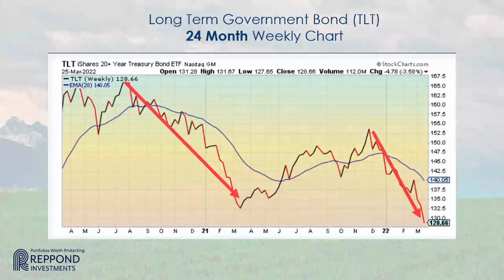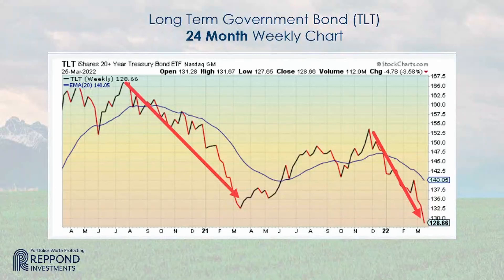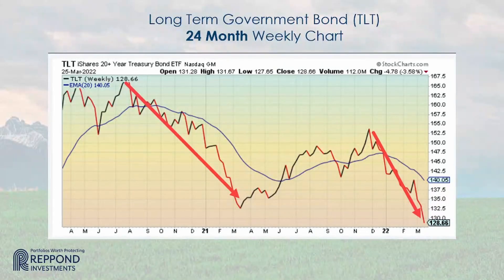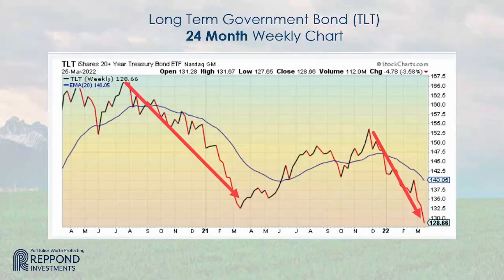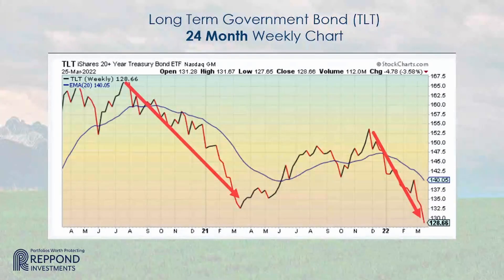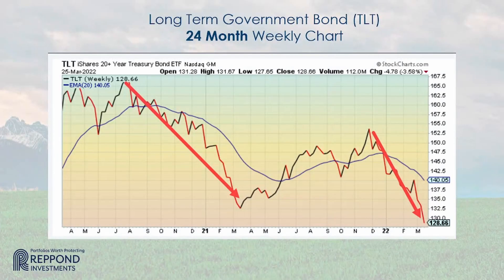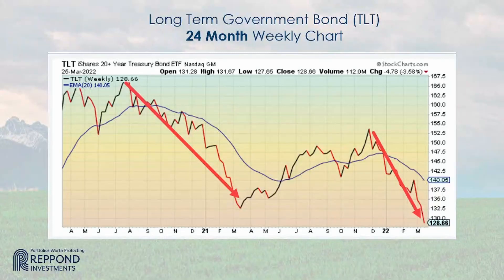This is a 24-month weekly chart of TLT, the long-term government bond ETF. You can see two long periods down, a short-term up, then a collapse. TLT has not been there when needed to counterbalance equity risk.